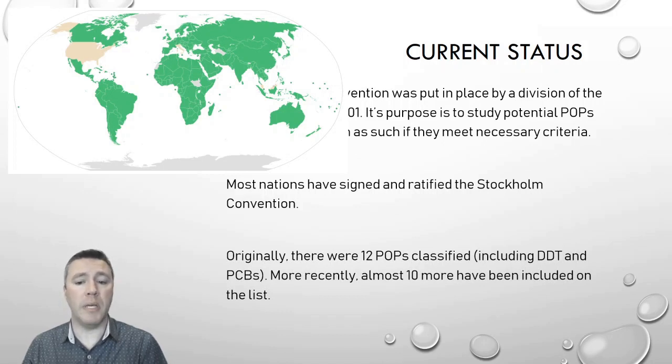Originally, 12 POPs were classified under the Stockholm Convention, including DDT and polychlorinated biphenols, but more recently, 10 more have been included on that list.